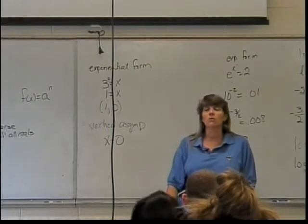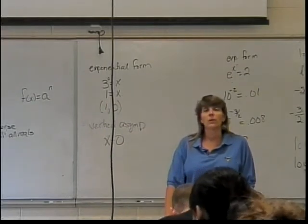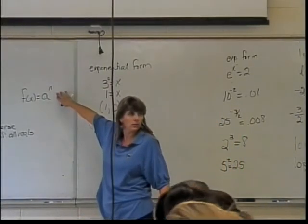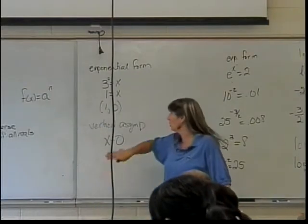There is no way for you to find that vertical asymptote other than you knew that the graph of your original function, f of x equals a to the x, when you reflected it over the line y equals x to get your inverse function, the logarithm.